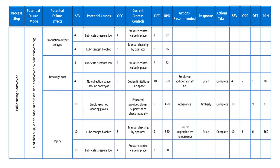There could be multiple failure modes in the palletizing conveyor stage — a failure mode where the conveyor gets stuck, a failure mode where the conveyor makes a noise, or a failure mode where the bottles come out inverted. I'm talking about just one failure mode here.